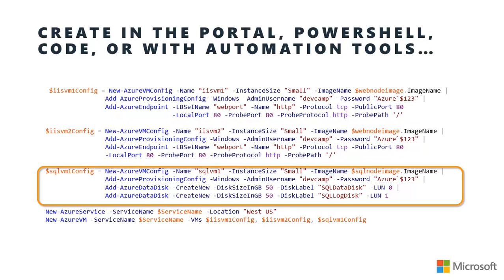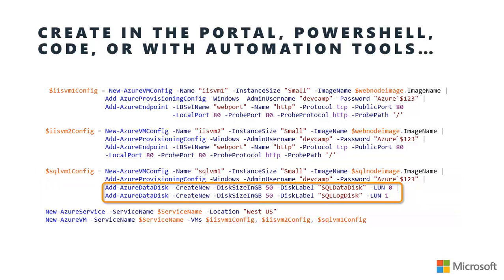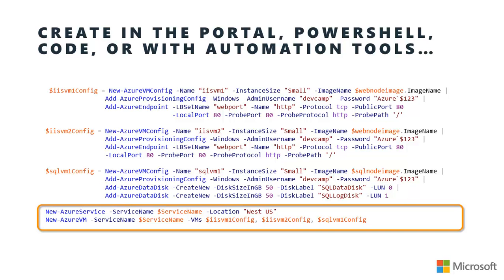And then finally, a third virtual machine configuration that's going to be our SQL virtual machine, and it has additional disks being attached to store our database data files and log files. Once we've got all those VMs configured, we can turn around and create a cloud service, which is the protective boundary around a collection of virtual machines. We tell it where the cloud service should be, create it, and add those three virtual machines into it. Being able to script things out like that is really cool.